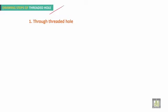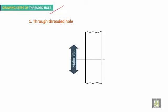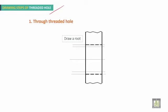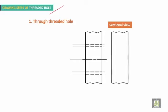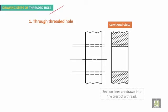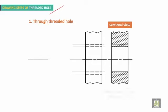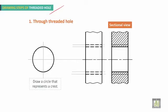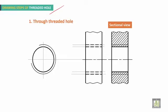For drawing steps of a through threaded hole: draw the center line. You have the major diameter and the minor diameter. Draw the root as a dashed line and the crest as a dashed line. In the sectional view, each dashed line becomes a continuous line for crests and roots, and hatching lines will cross the root line. For the side view, draw a circle that represents the crest, and the arc representing the root should be outside the circle and cross one of the axis lines.